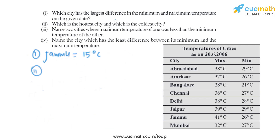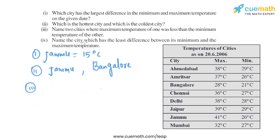For sub-part two, the hottest city is found by identifying the largest maximum temperature. Jammu has the biggest maximum temperature value, so Jammu is the hottest city. For the coldest city, we look at the lowest minimum temperature, which is Bangalore at 21 degrees Celsius. So the hottest city is Jammu and the coldest is Bangalore.